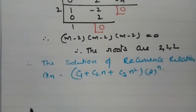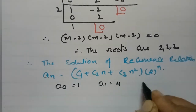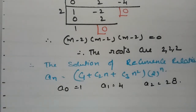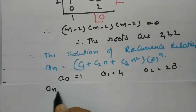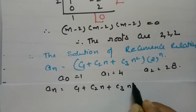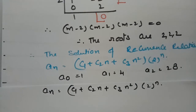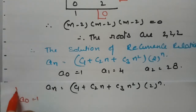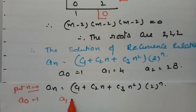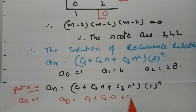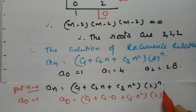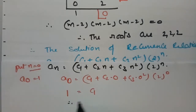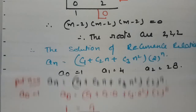The general solution is a_n = (c_1 + c_2·n + c_3·n²) · 2^n, with initial conditions a_0 = 1, a_1 = 4, a_2 = 28. For a_0 = 1, put n = 0: a_0 = c_1 + c_2·0 + c_3·0² times 2^0, so 1 = c_1. Therefore c_1 = 1.